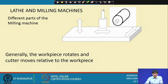In that case the machine gets the name vertical milling machine. If the axis of this tool is horizontal and this sort of tool is used, the machine gets the name horizontal milling machine.